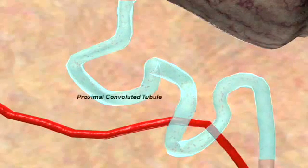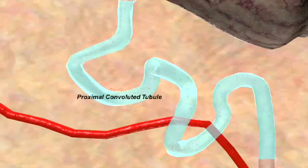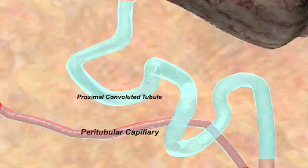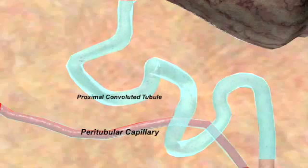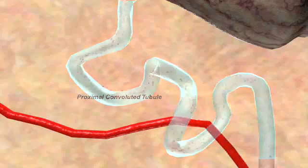The first section of the nephron is called the proximal convoluted tubule. The proximal convoluted tubule is highly permeable, and about 65% of the filtered sodium and water leak out to be reabsorbed into the nearby capillaries. Old diuretics called carbonic anhydrase inhibitors mostly act on this portion of the nephron.